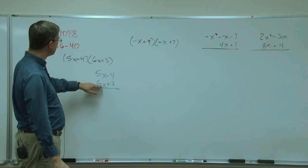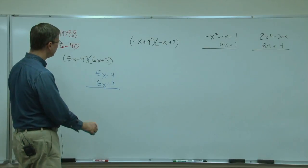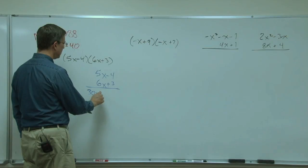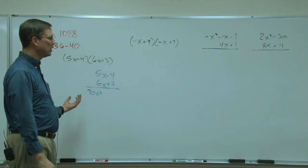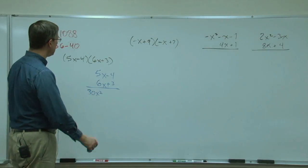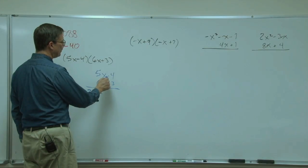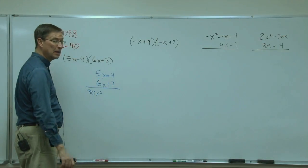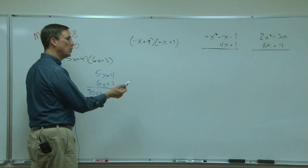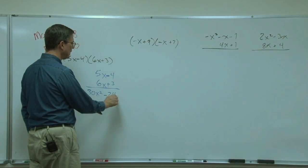Then we can take this first term on the bottom, multiply it times this one on the top, and that gives me 30x squared. Notice I kind of put it over to the side, because I'm going to end up with three different kinds of terms. Now I'm going to take the 6x and multiply it times the 4, but being careful to notice that it's actually negative 4. We know that 6 times 4 is 24, but a positive times a negative gives me negative 24x.